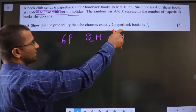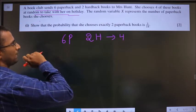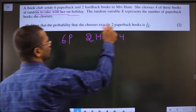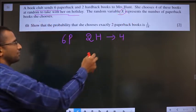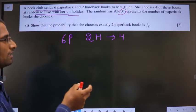The random variable X represents the number of paperback books she chooses. X is for the paperback books.